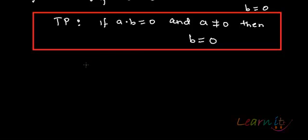So a·b equals 0 is something we take as given. What we can do is we can multiply—we can make use of the inverse of a and multiply on both the sides.